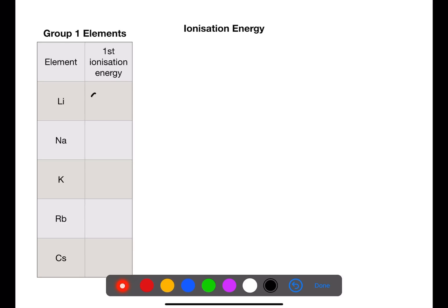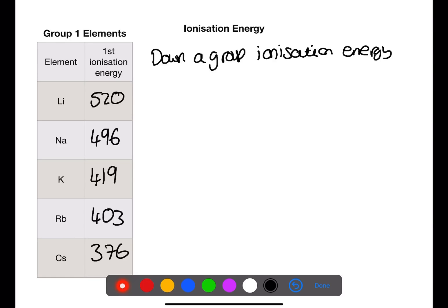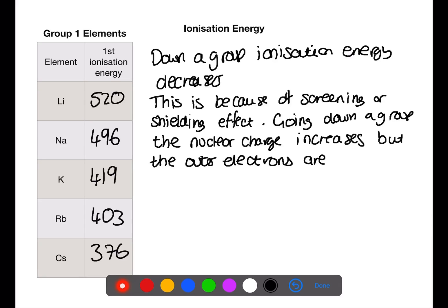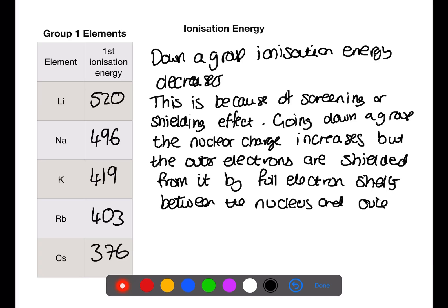Lithium has an ionization energy of 520. Sodium is 496. Potassium is 419. Rubidium is 403. And caesium is 376. In general, the trend going down the group is that ionization energy decreases. This is because of screening or shielding effect. Going down a group, the nuclear charge increases, but the outer electrons are shielded from it by the full electron shells between the nucleus and outer shell. As you go down the group, an extra shell is added for each period.